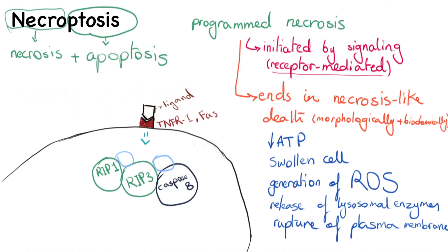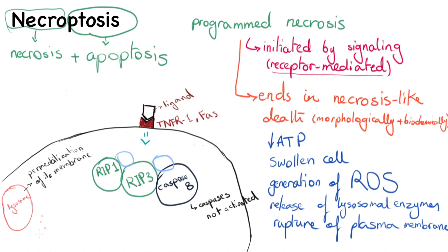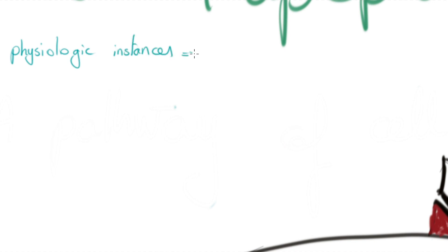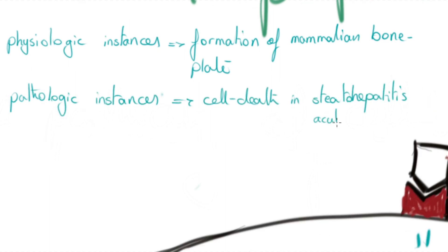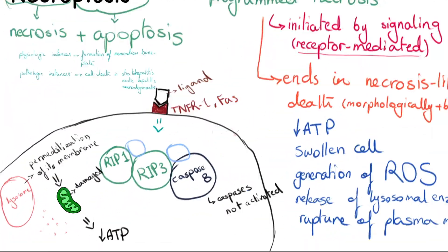This complex also includes caspase 8. The major difference with apoptosis is that caspases are not activated in this process. The end result involves permeabilization of the lysosomal membrane, which causes damage to mitochondria and reduction of ATP levels. Necroptosis can happen in physiological instances such as during the formation of the mammalian bone plate, as well as pathological instances like cell death in steatohepatitis, acute pancreatitis, and neurodegenerative diseases such as Parkinson's disease.